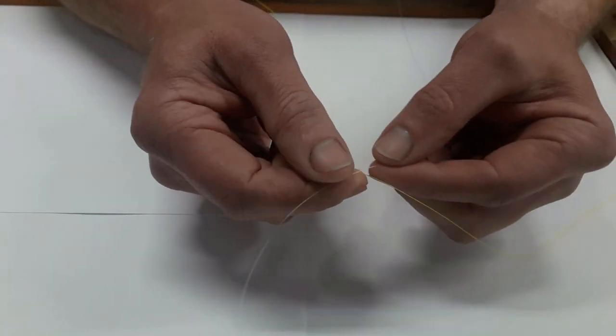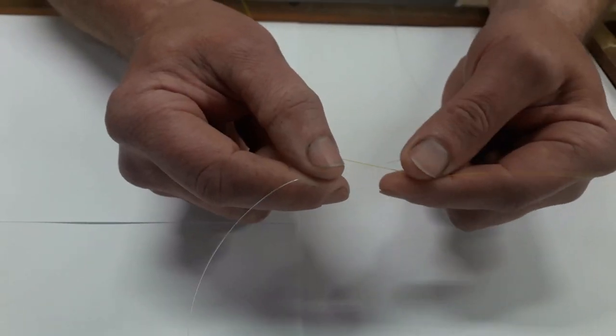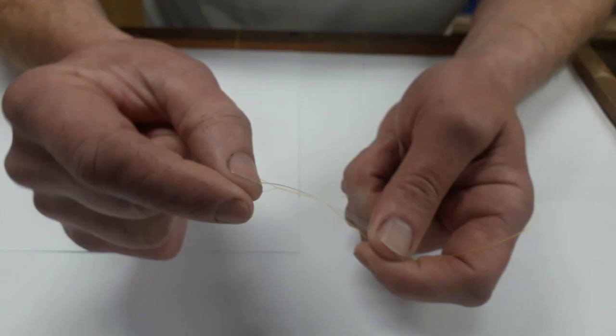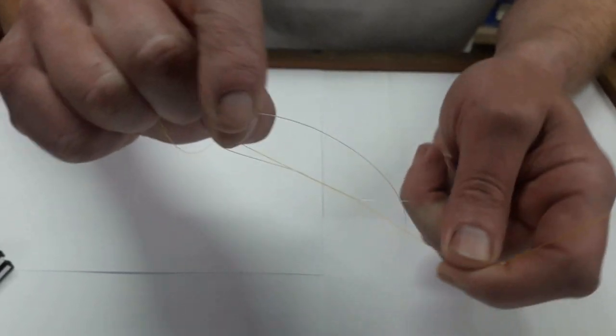So we'll cross our line over like this, make an X, wrap this one one, two, three, four times around there. We put that in down through here.